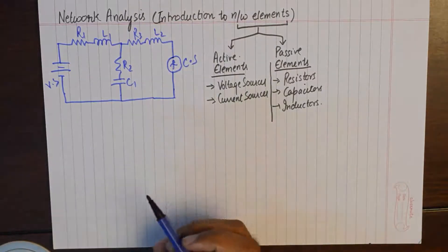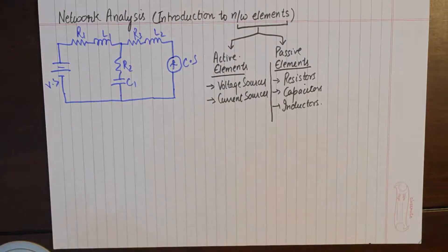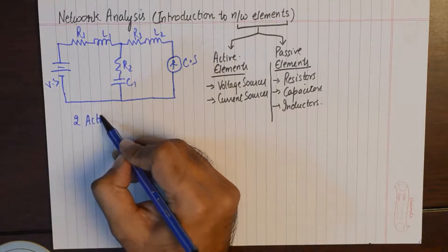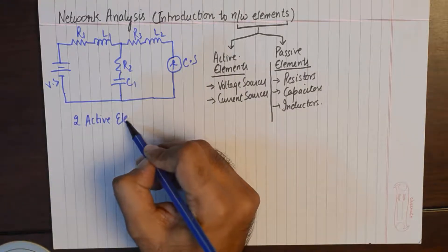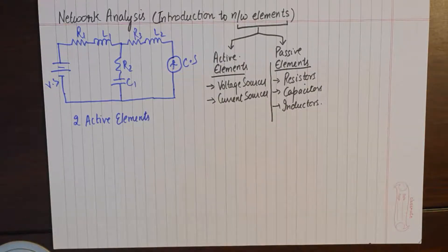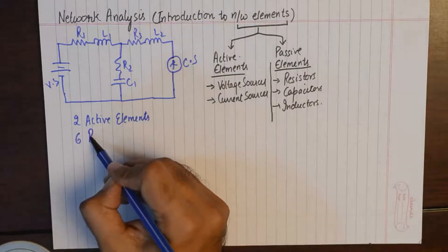Now if we were to classify the elements in this network, we would say that this network has two active elements with a voltage source and a current source, and it has six passive elements.